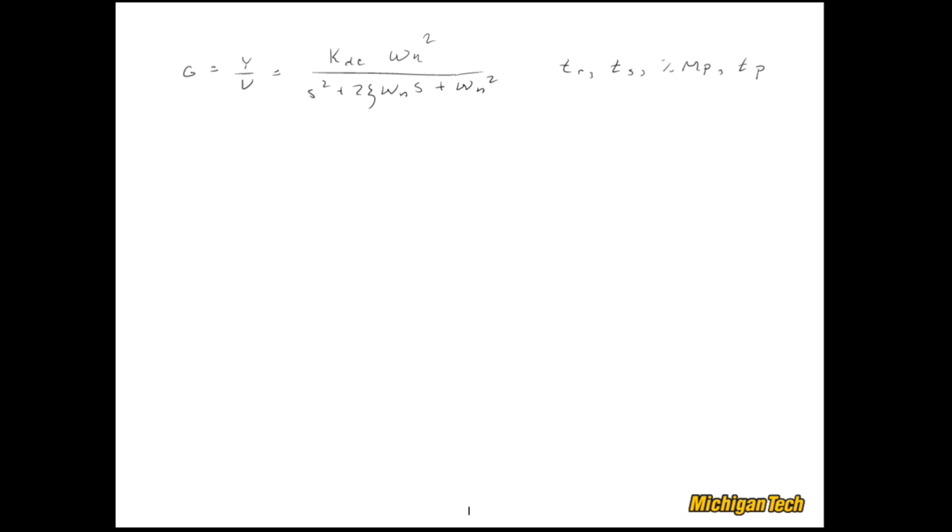Let's look at what the pole locations of this system look like in the complex plane. So here we have a couple poles, and for this case I'm assuming that zeta is between 0 and 1, so the system is underdamped.